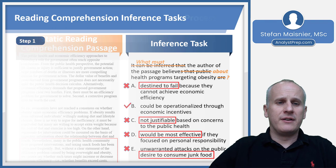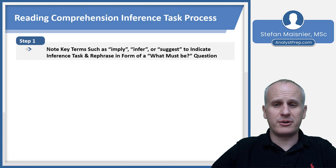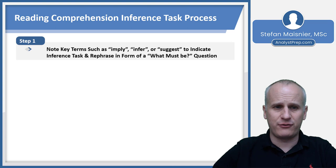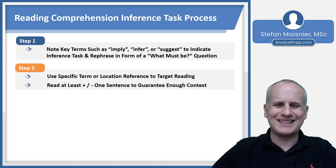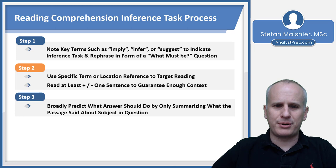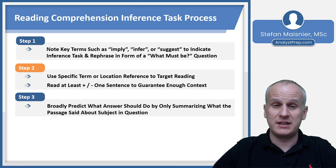For future inference task questions: step one is to note key terms indicating an inference task, such as 'imply,' 'infer,' or 'suggest.' If you see any of these three terms, they're basically saying 'what must be,' and then you rephrase the question in the form of 'what must be' while setting up your scratch pad as always. Step two: use the specific term or location reference to target your reading, and always read at least one sentence above and below to guarantee context — unless it's talking about the passage overall, in which case you'll rely on your passage map. Step three: predict what the answer should do only by summarizing what the passage said about the subject in the question.